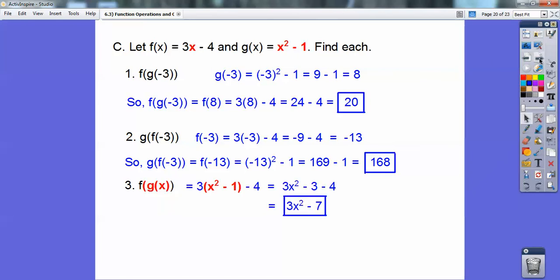So this x squared minus 1 goes into my f of x for where the 3x is right there. And then go ahead and distribute that 3 through, and you get the final answer is 3x squared minus 7. I just plugged in the whole g of x in for that x right there.